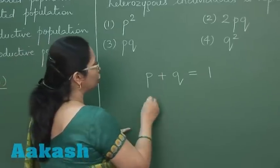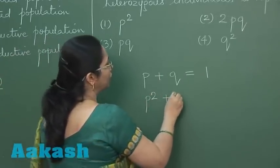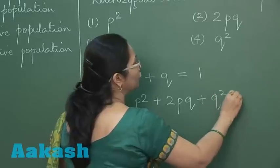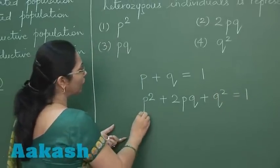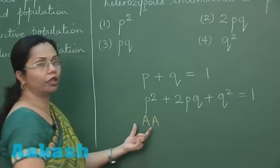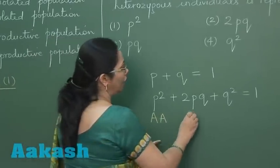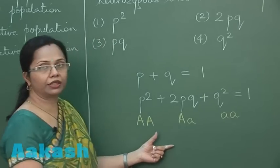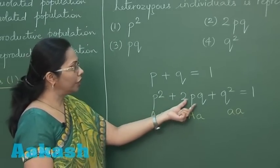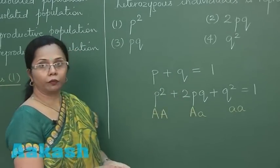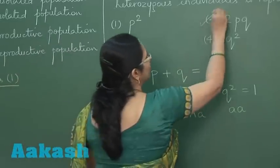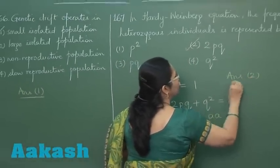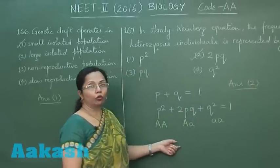So we square this equation and we get p² + 2pq + q² = 1, where p² is representing homozygous dominant, this is heterozygous, and this is homozygous recessive. So here it's the 2pq which is the heterozygous individuals, and this is our correct answer, that is option number 2.